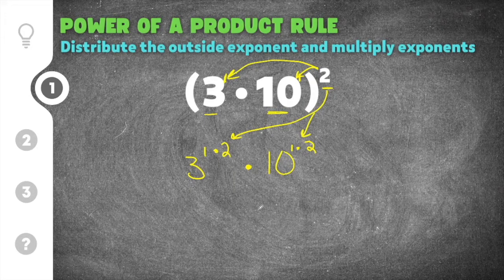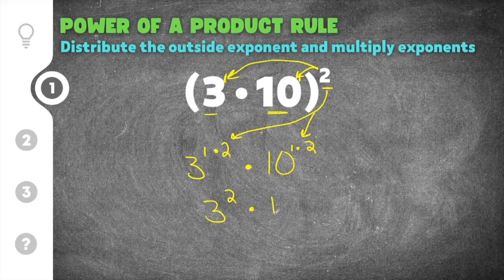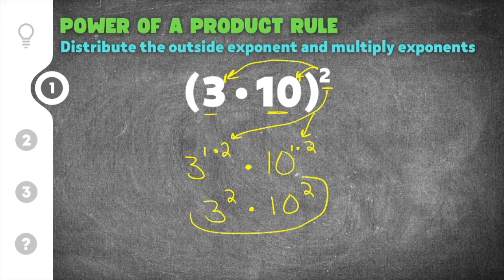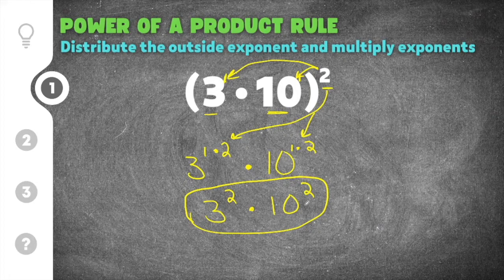After you do this, you can simplify. So 3 to the 1 times 2 — 1 times 2 is 2 — multiplied by 10 to the first power times 2, so 1 times 2 is also 2. The solution to this problem is 3 squared times 10 squared. For exponential terms, you can only combine them if they have the same base. In this case, the base of 3 and the base of 10 are different, so you cannot multiply these any further. This is the most simplified version of this problem.